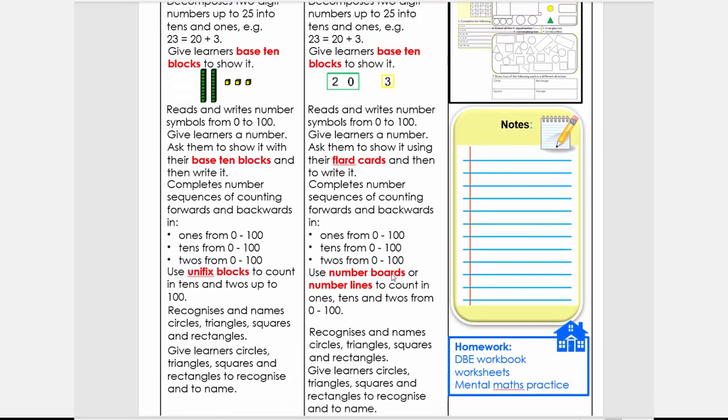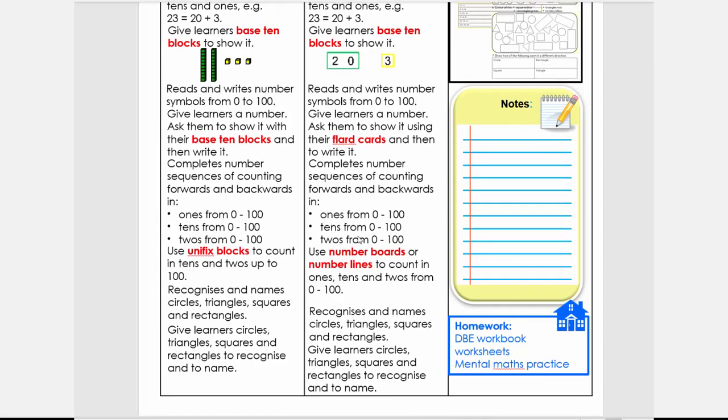We're going to read numbers and work in ones, tens, and twos. You can use your 100 boards for that. Lastly, we're going to look at shapes. Draw shapes, ask them to draw a lot of circles on a page, then triangles, squares, rectangles. Doesn't have to be 100% perfect at this stage. If you have a stencil it's nice, but there is nothing wrong with doing it freehand.